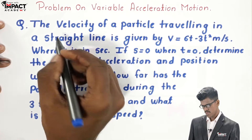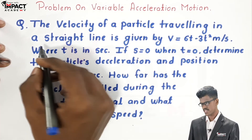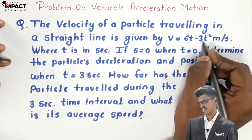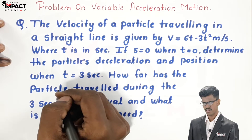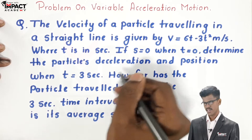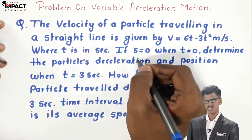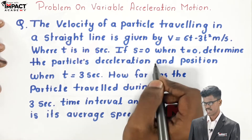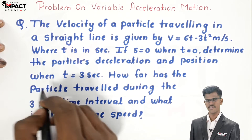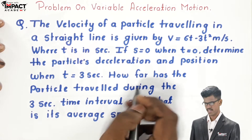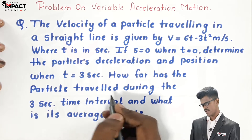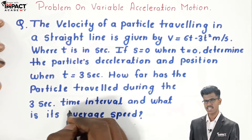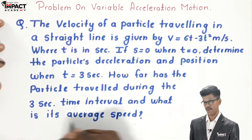There is a problem. The velocity of a particle traveling in a straight line is given by v equals 6t minus 3t squared meters per second, where t is in seconds. If s equals 0 when t equals 0, determine the particle deceleration and the position when t equals 3 seconds. How far has the particle traveled during the 3-second time interval, and what is its average speed?